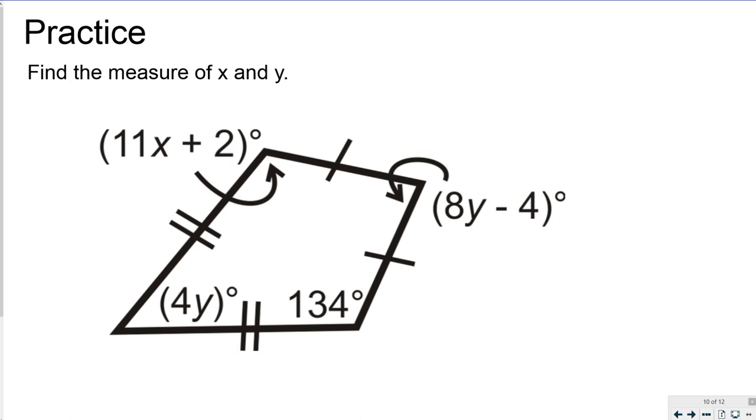So here's one where I have to find the measure of X and of Y. So the first thing that I need to do is actually use, find the measure of X, and then go back and use that angle measure here in order to calculate all these three angles. All the two missing variables, excuse me.